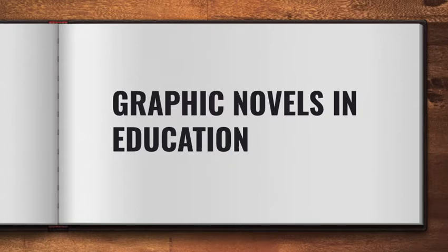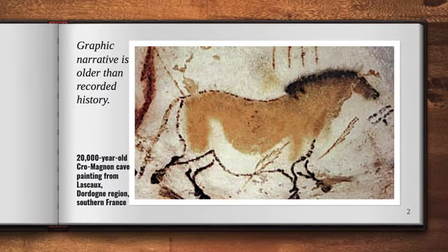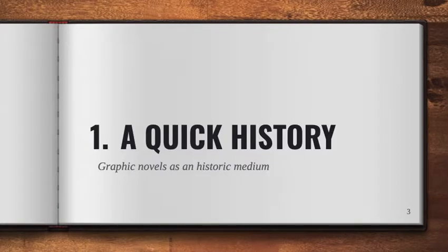This lecture is about graphic novels and their use in education. Graphic narrative is one of our oldest forms of communication — think back to cave paintings. This 20,000-year-old depiction of a hunting excursion is a good example. It's a way of telling a story, and that's exactly what visual narrative is all about.